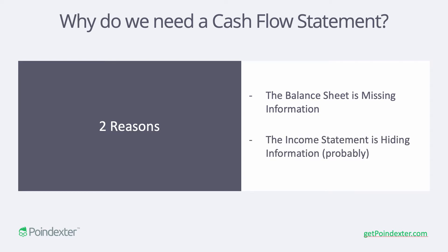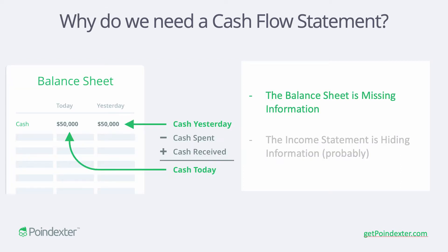The second reason is that the income statement is hiding some key information in most situations — the income statement isn't giving you the whole story about what's happening with cash behind the scenes. If we take a look at a simple example of a balance sheet, we can see that between two reporting periods — in this example today and yesterday — it's hard to tell what happened to our cash balance. It's like looking at your bank account balance yesterday and today and only seeing the balance on both days are the same, but you know you spent money and received money, so that spending and receiving is lost in translation between the two periods. We only see the ending balance but not the actual transactions.